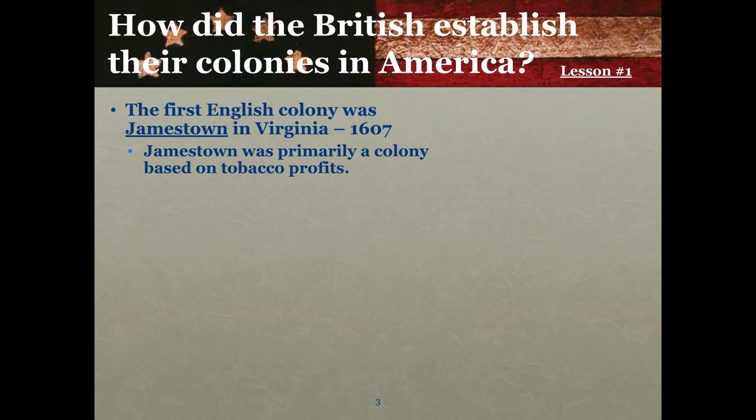Jamestown eventually made money selling tobacco. Before the tobacco arrived, things were a bit dodgy — the colony almost did not survive. They were eating their dead; they were eating tree bark. And tobacco basically saved that colony. That is when tobacco started to get exported to the rest of the world, creating today's lung cancer situation.